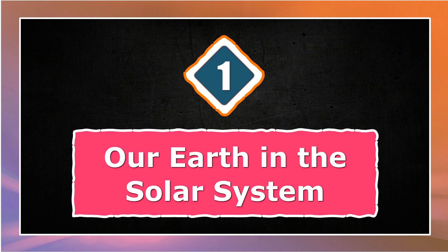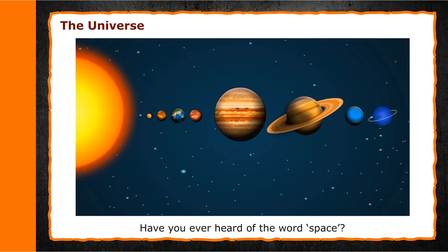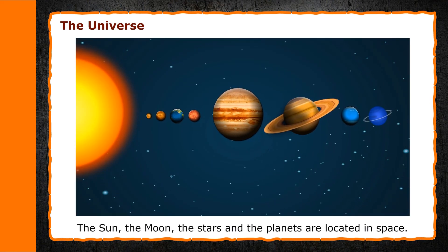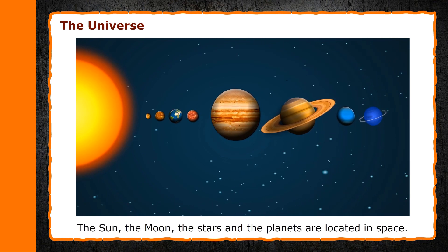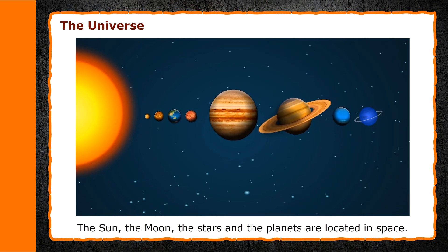Chapter 1: Our Earth in the Solar System. The Universe. Have you ever heard of the word space? The Sun, the Moon, the stars, and the planets are located in space.